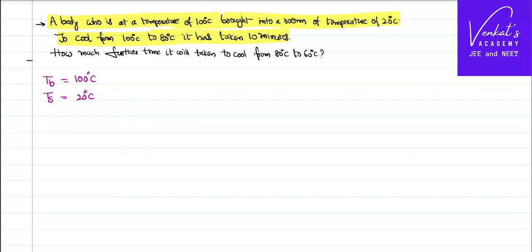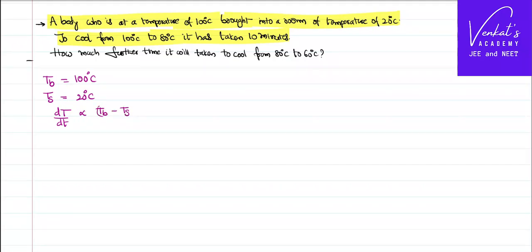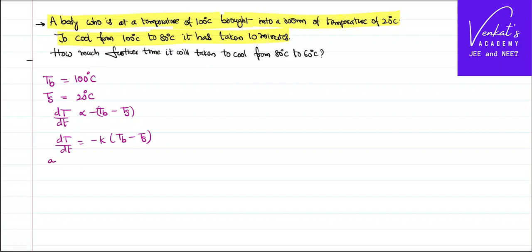As per Newton's law of cooling, the rate of loss of temperature is directly proportional to the temperature difference between the body and the surroundings. The negative sign symbolically indicates a loss of heat or temperature. We eliminate the proportionality with a constant K, giving: dT/dt = -K(T_body - T_surroundings).